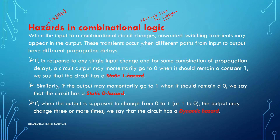These transients occur when different paths from input to output have different propagation delays. The hazards occurring in the circuit are mainly because of propagation delay. In the previous video we checked regarding propagation delay or gate delay, and we also checked how to indicate these propagation delays.